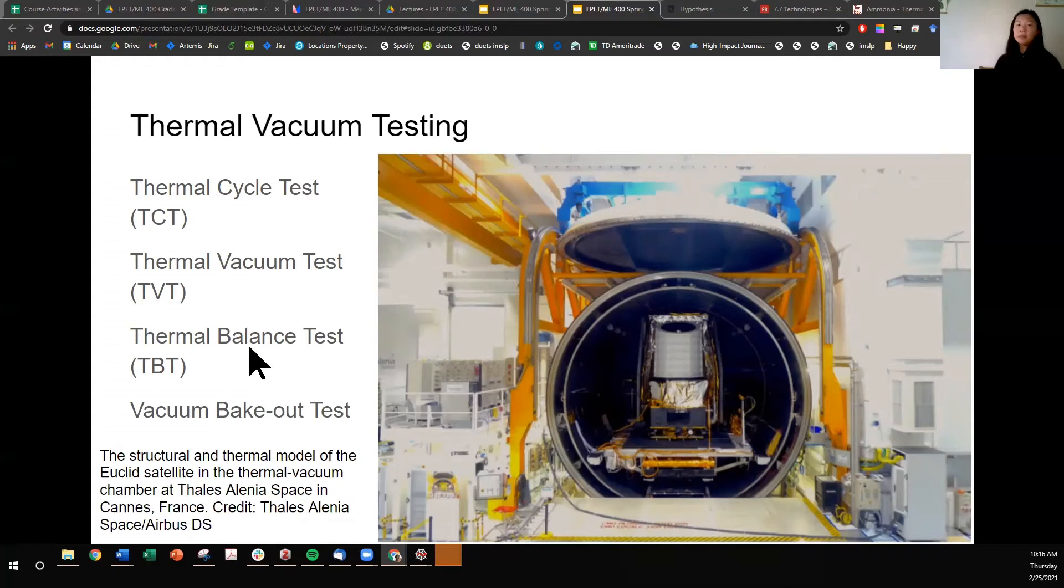So the thermal cycle test is generally executed in ambient pressure through the use of environmental chambers. This test is usually executed to a subsystem or system level. The test article, so what you put in the chamber, will be exposed to a series of cycles of hot and cold temperatures. The thermal cycling generates in the test article that allows to identify material and workmanship defects.